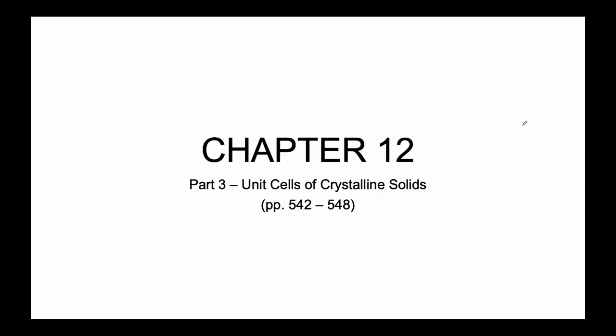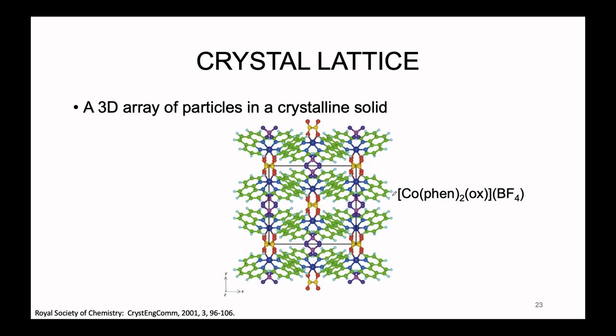Hello and welcome to part three of chapter 12, wherein we discuss unit cells of crystalline solids — the little nuggets that we can use as a comprehensive picture for the whole. We are going to be focusing on crystalline lattices. We talked about this last lecture — the difference between amorphous solids and crystalline solids. We will still be discussing crystalline solids, which form very nice long-ranged, consistent crystals.